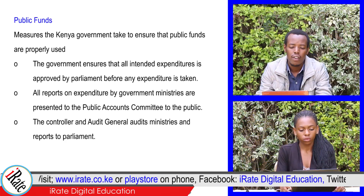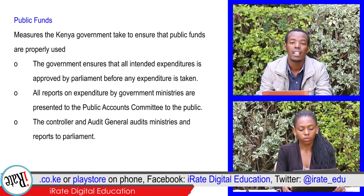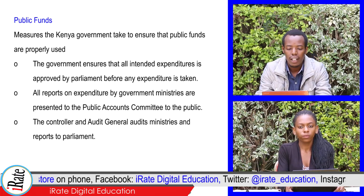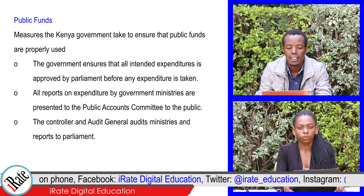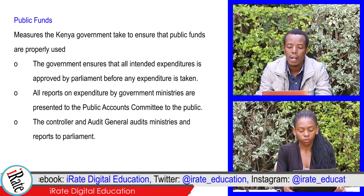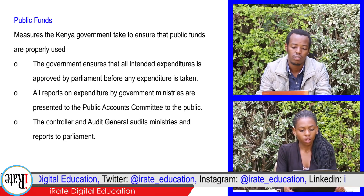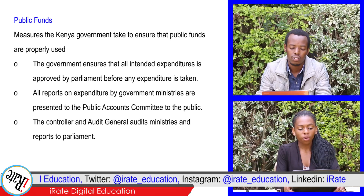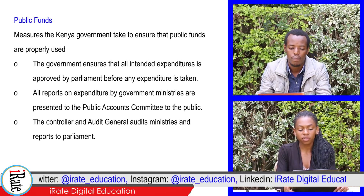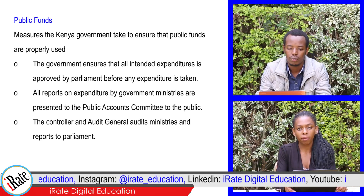Measures that the Kenya government takes to ensure that public funds are properly used. One, the government ensures that all intended expenditure is approved by parliament before any expenditure is taken. Two, all reports on expenditure by government ministries are presented to the public accounts committee to the public.